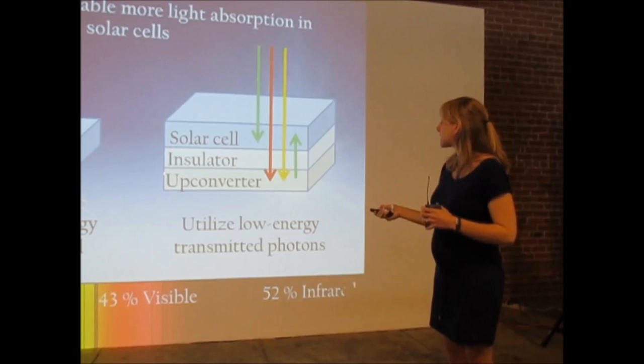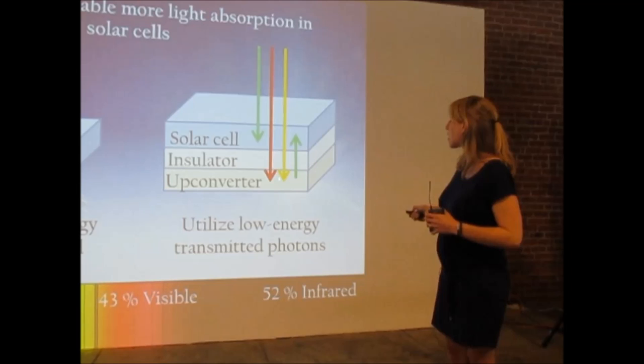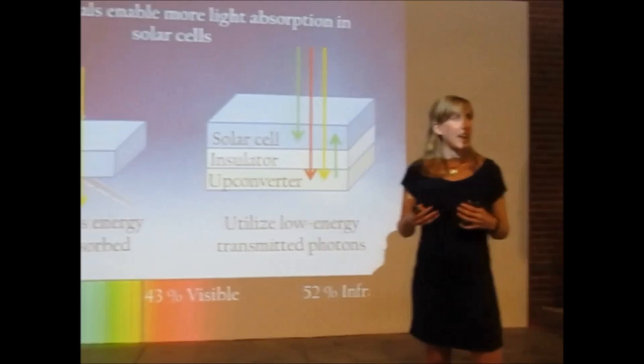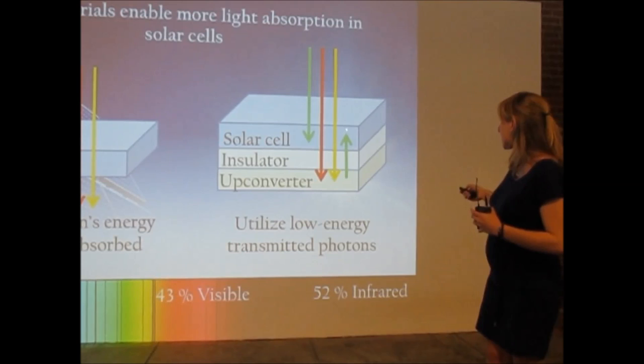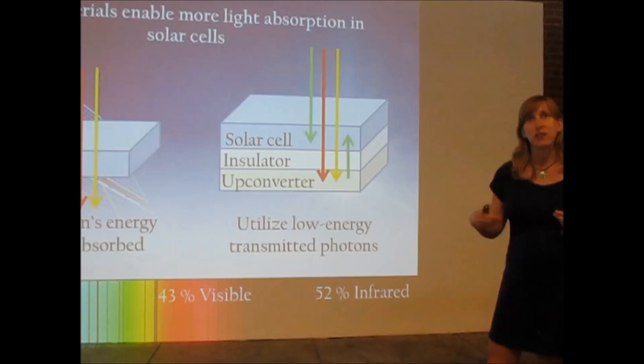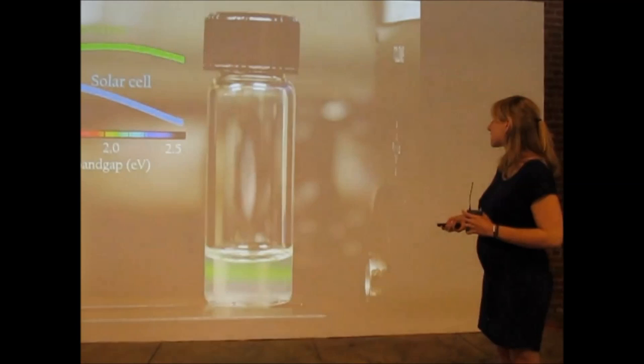What our group is working on is a technology called upconversion, where we can place a material behind the solar cell, separated by a simple insulating layer, that can take these lower energy transmitted photons and combine them together to make a photon that has sufficiently high energy to cross the band gap of the cell above it. And then we direct those photons back towards the cell, so it can be absorbed and then contribute to photocurrent or contribute to production of electricity.